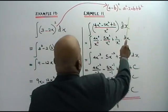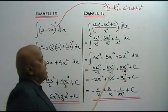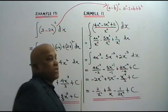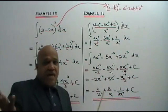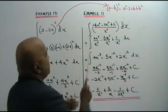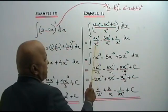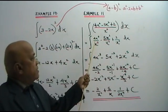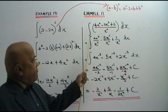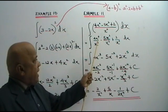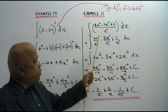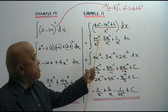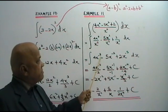Now let's look at example 11. Here we are supposed to integrate this expression with respect to x. First step: what should we do? We divide each term by x to the power of 5. So you get 4x to the power of 2 minus 5, which is x to the power of negative 3. 2 minus 5 is negative 3.